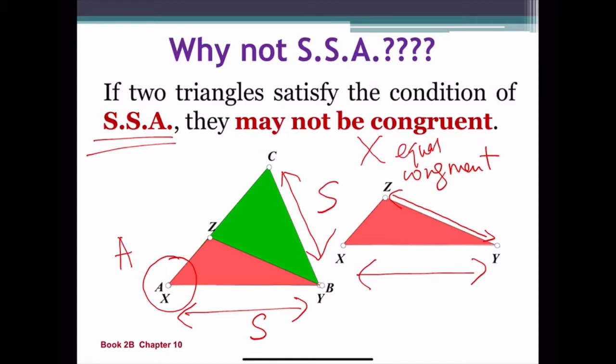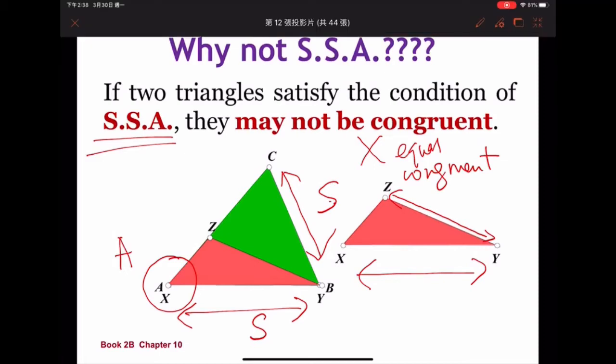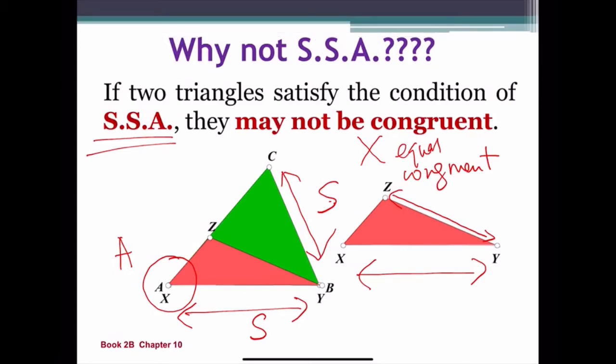So these two triangles, they are in the condition of SSA, but they are not congruent. Therefore, we can't use SSA to state for congruent triangle. So we can't use SSA.